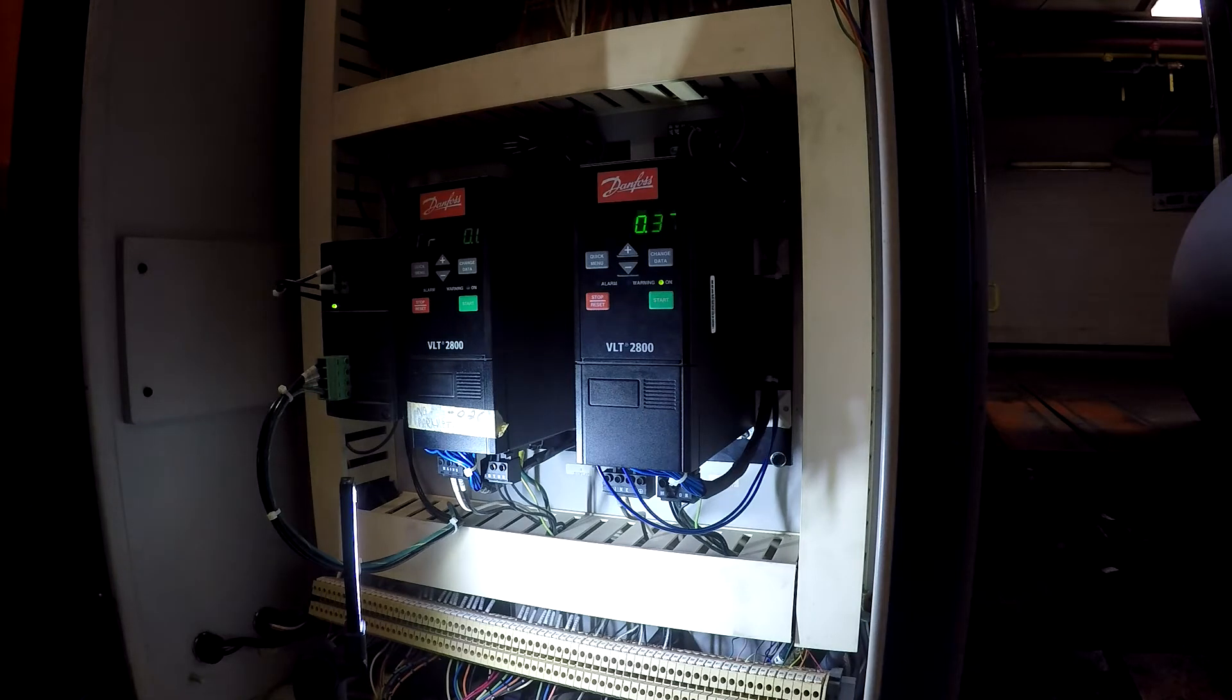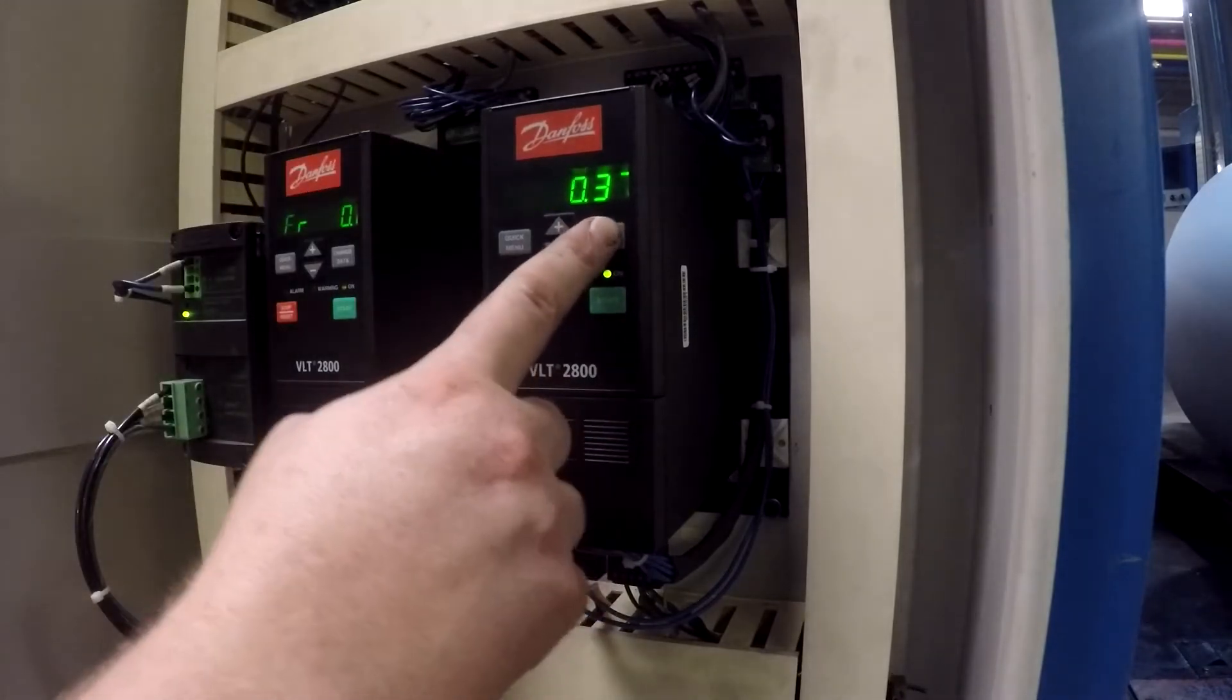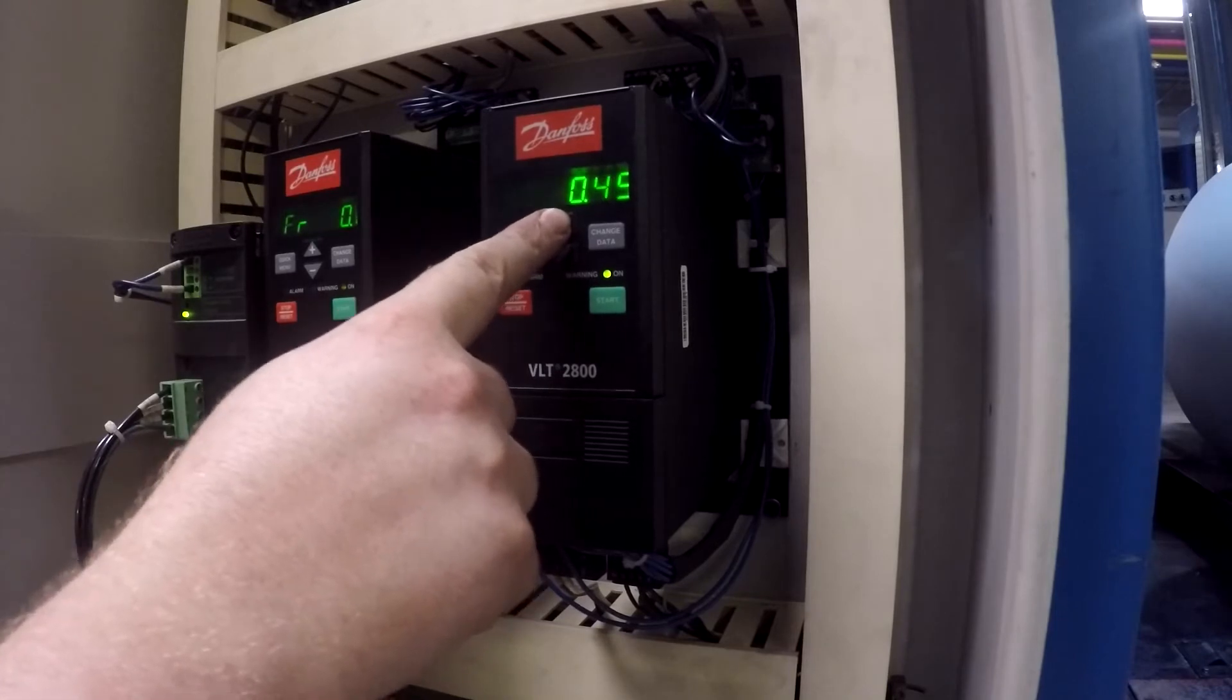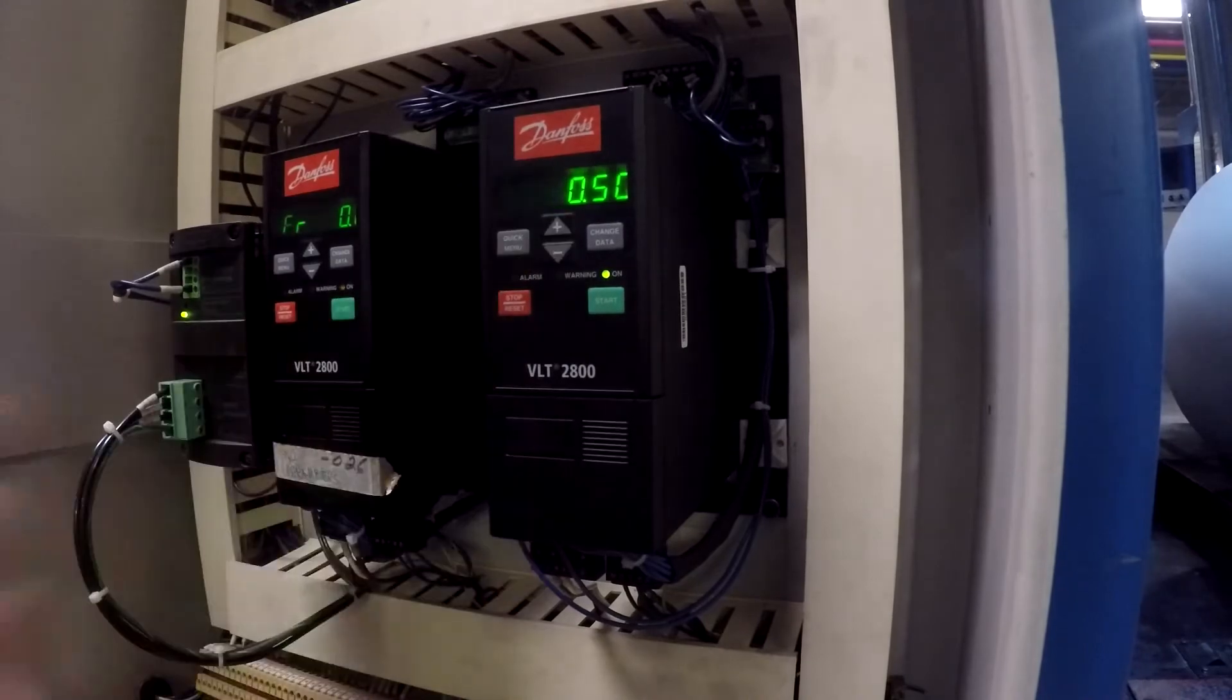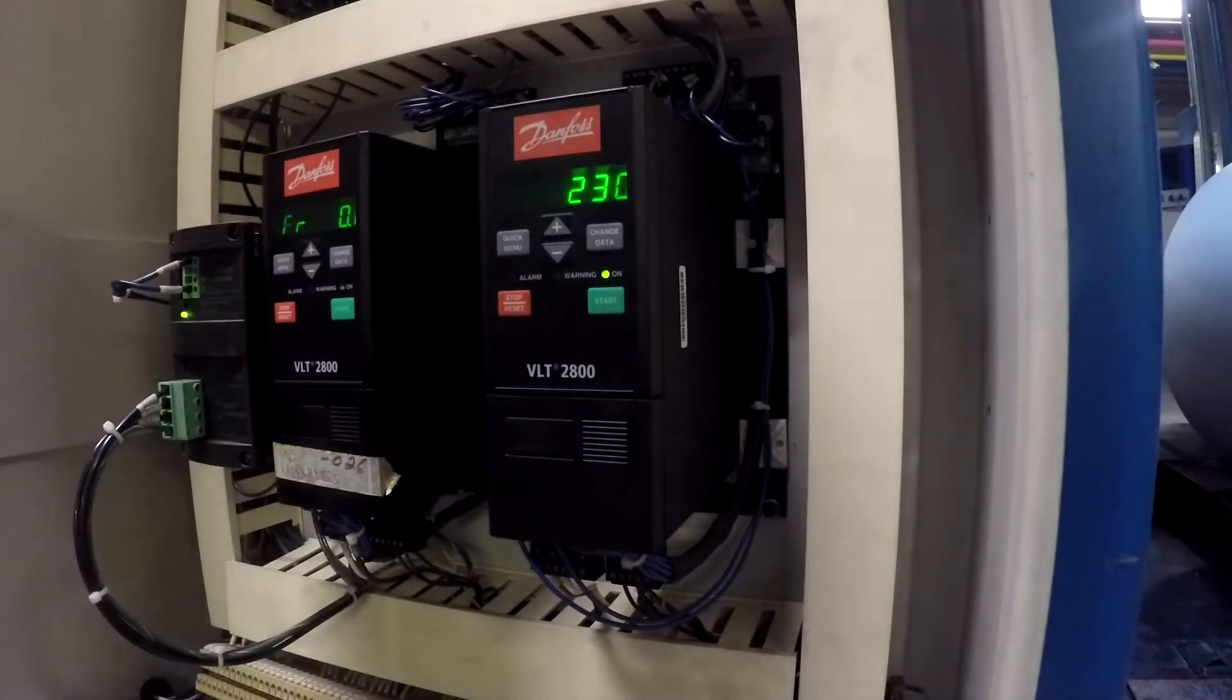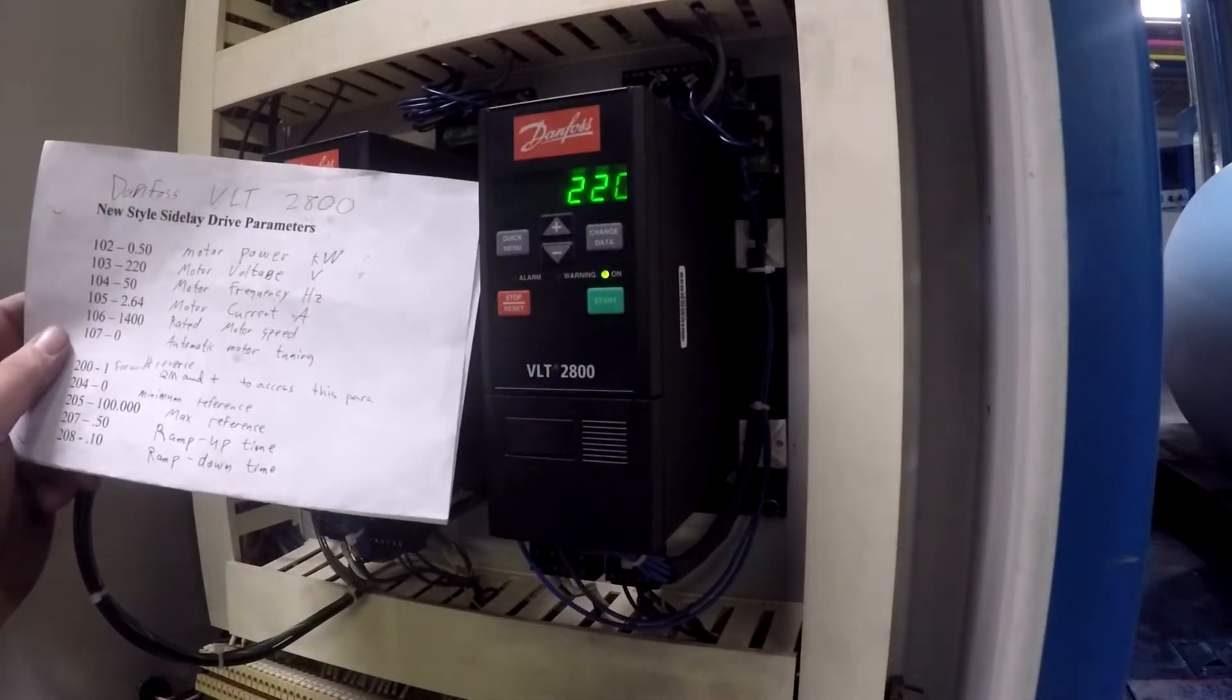All right, so now it's at factory defaults and these are the parameters I got to set. So 102 needs to go to 0.50. Change and increase this, then hit change data. Now we're going to 103, it needs to go to 220, so that's the motor voltage.